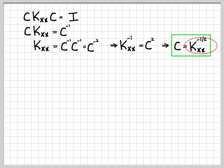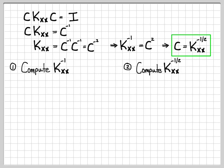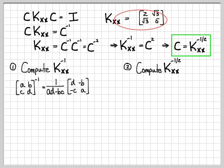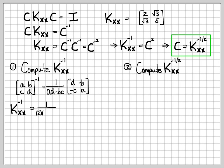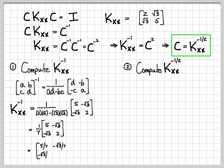To compute K to the negative one-half, we first compute the inverse of K, then take its square root. For a general 2x2 matrix [a, b; c, d], the inverse is (1/(ad-bc)) times [d, -b; -c, a]. Applying this to K_xx = [2, sqrt(3); sqrt(3), 5], the inverse is 1/(2·5 - sqrt(3)·sqrt(3)) times [5, -sqrt(3); -sqrt(3), 2], which simplifies to (1/7)[5, -sqrt(3); -sqrt(3), 2], or [5/7, -sqrt(3)/7; -sqrt(3)/7, 2/7].